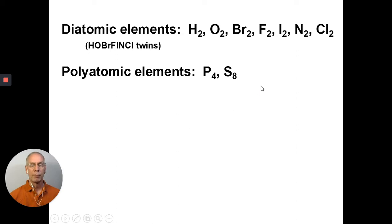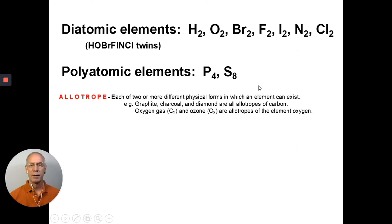Now, I've written down a couple definitions that I found online. So, here's the online version of an allotrope, each of two or more different physical forms in which an element can exist. So, in other words, an element, even though we think of it as a single thing, can be put together and grouped together in more than one way. So, we're going to look at a couple of examples.